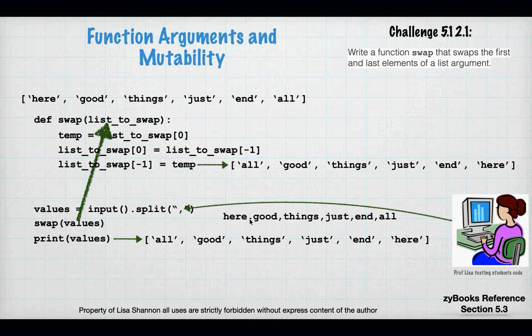In some languages that's called a pointer; in others it's called an object reference. Python has one place in its storage bank that contains that information. When it calls a function, it does not make a copy - it simply passes the address. Sometimes you want it to make that change, and sometimes you don't. When writing functions and calling them, consider whether you want to make a copy or just change everything.